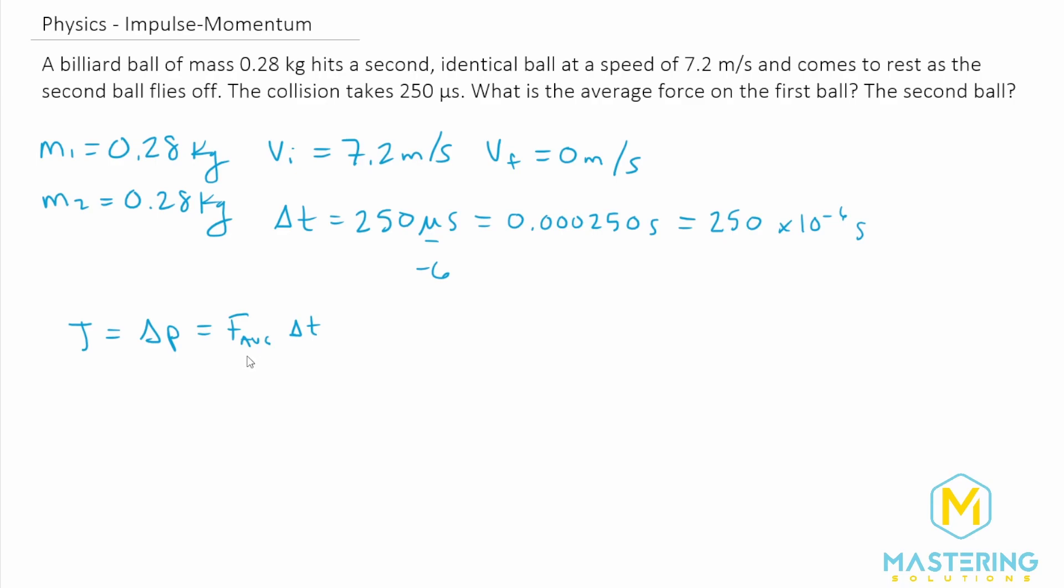For ease of not having to write it a million times, I'm going to not write average on the force. I'm just going to write F for force, but know that that is what we're referring to. So we have delta P is equal to F times delta T. And then if we break up the change in momentum, we have MV final minus MV initial is equal to F delta T.